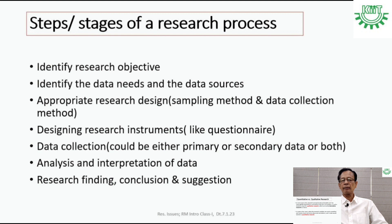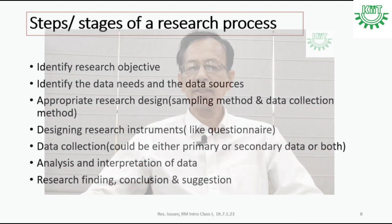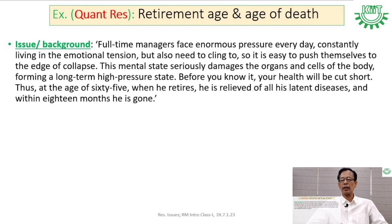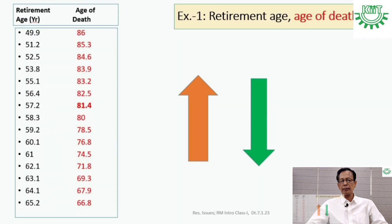As I will be taking up the quantitative research part, I thought of highlighting one simple example of a researcher who studied the possible relation — the association between retirement age and age of death. The data, as you can see, shows a negative correlation: if one increases, the other decreases. The finding was very interesting — that if one retires early, one lives longer.